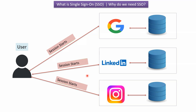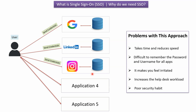With this approach, we will see what problems arise. In the previous slide we saw three applications, but suppose there are 20 applications. Without Single Sign-On, the first problem is it takes time and reduces speed — the user has to send credentials for each and every application and has to remember all those credentials. The second problem is it is difficult to remember the username and password for all the different applications.